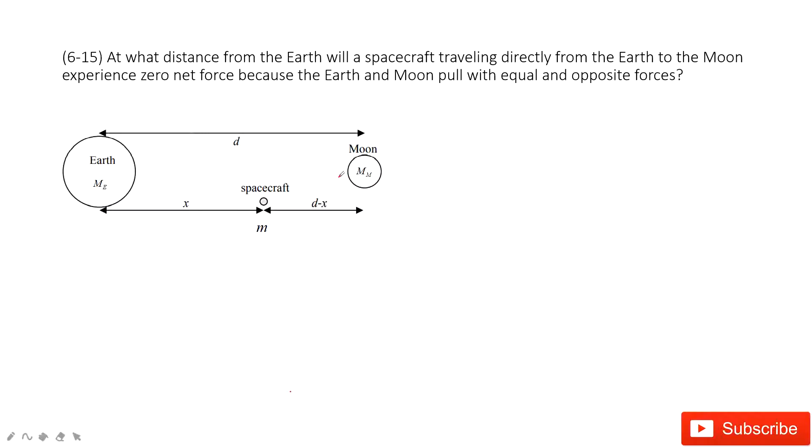In this one, we can see between the Earth and the Moon, we have the spacecraft with mass M. On this spacecraft, it experiences zero net force because the Earth and Moon pull with equal and opposite forces.